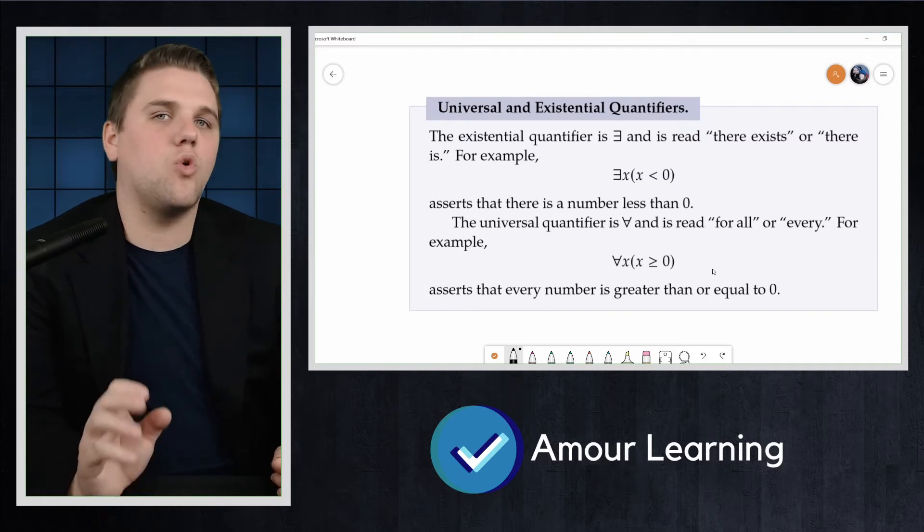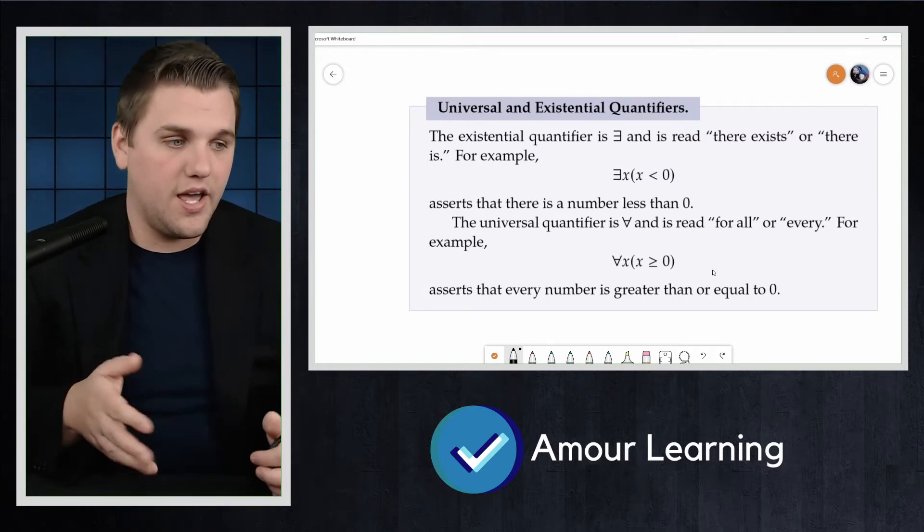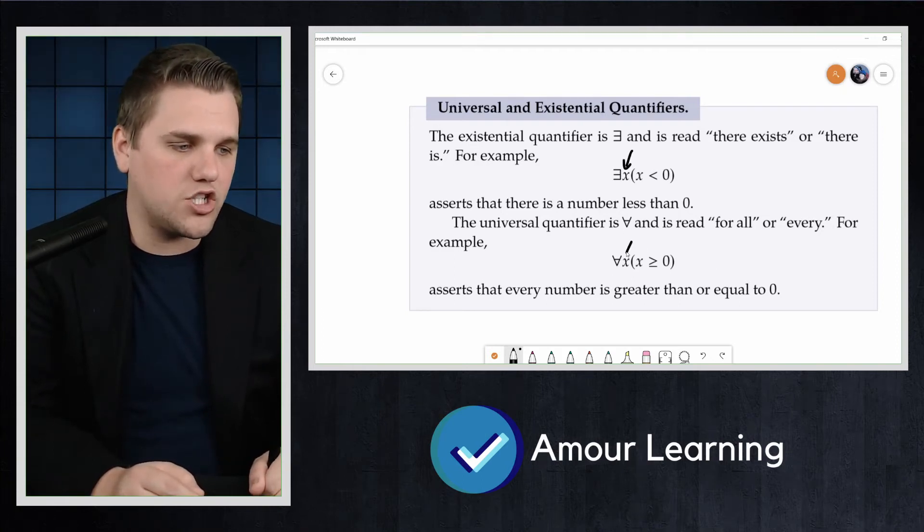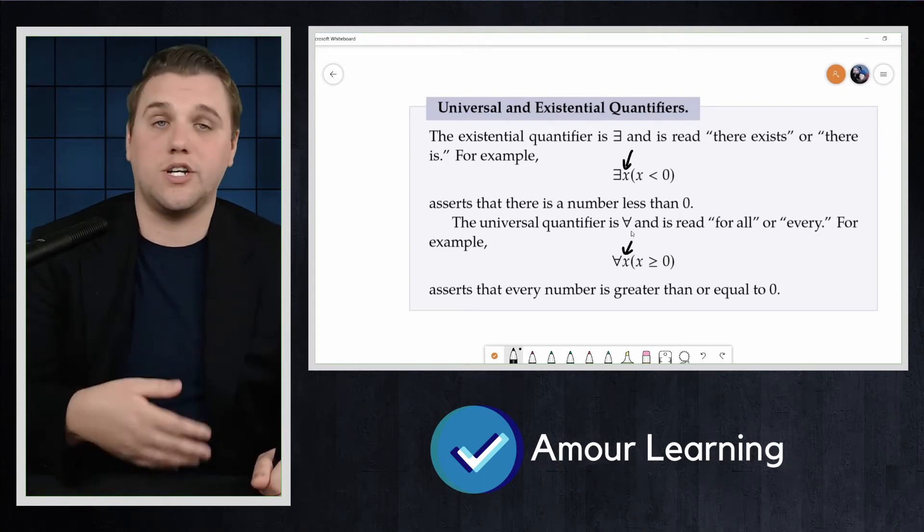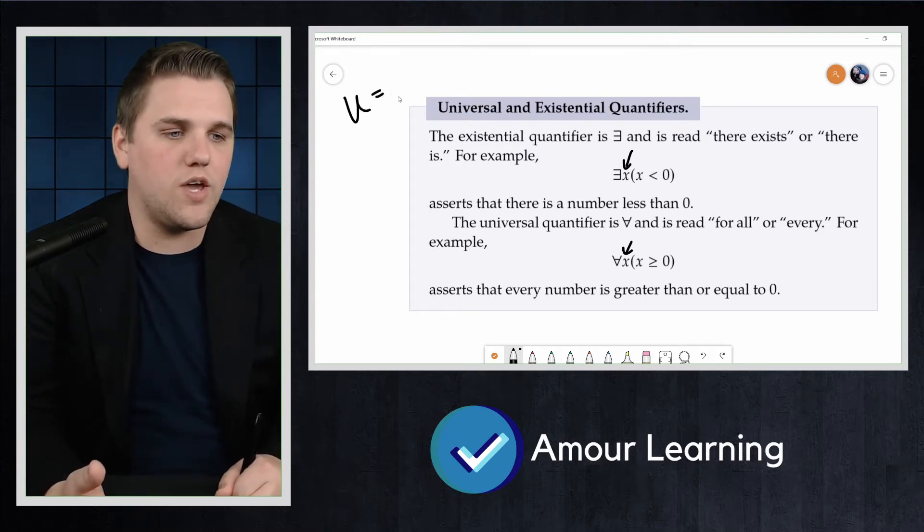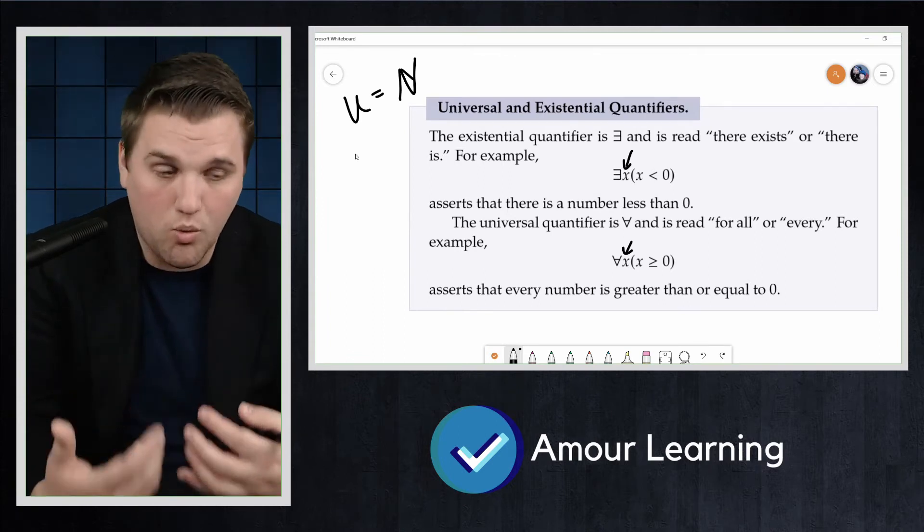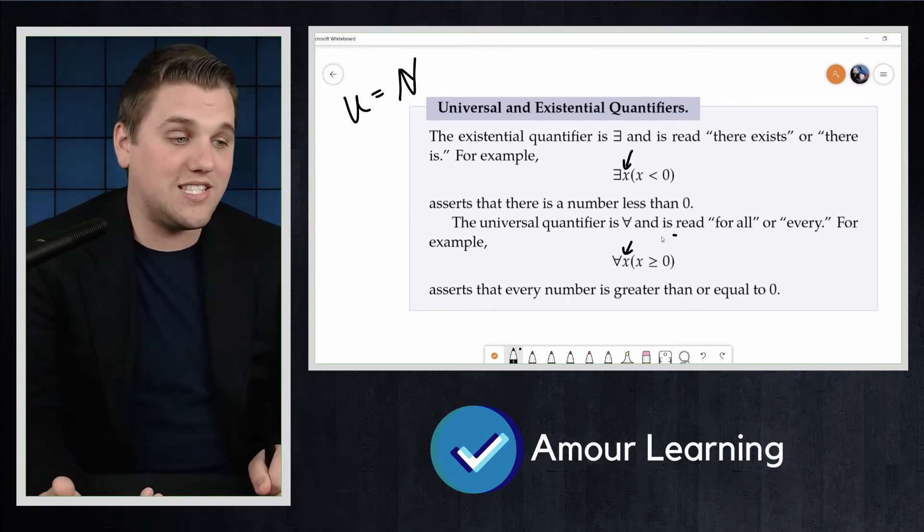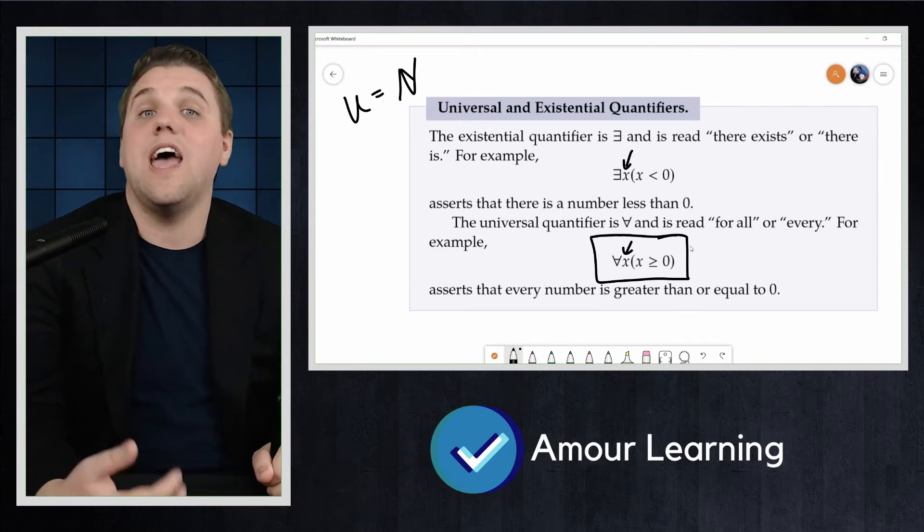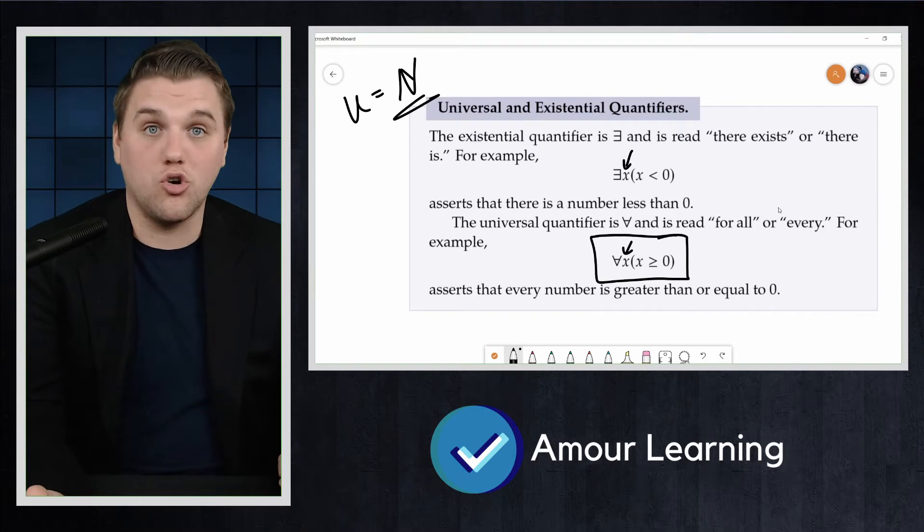Now, it's important to understand that when you quantify, it's important to quantify over a set. And so this X here belongs to a universe. And it's always important to describe what that universe is. So sometimes you'll see me write U equals the natural numbers, meaning that the natural numbers is the universe that we're working in. In which case, this statement is actually a true statement. Every element in my universe is at least zero. That's true.